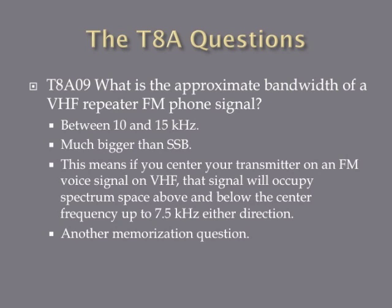What is the approximate bandwidth of a VHF repeater FM phone signal? The answer is between 10 and 15 kilohertz. This is an answer you just need to memorize. A VHF repeater FM phone signal will take up between 10 and 15 kilohertz — much bigger than single sideband. If you center your dial on an FM VHF repeater phone signal, 7.5 kilohertz above and 7.5 kilohertz below will be taken up by that signal.